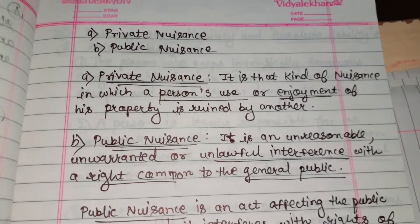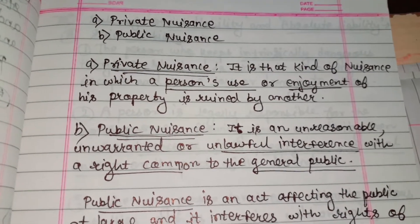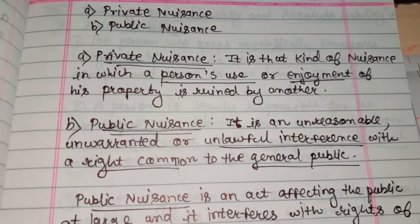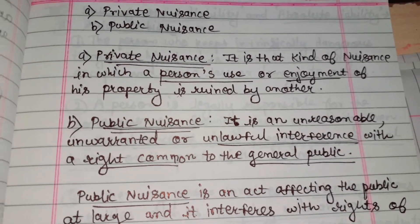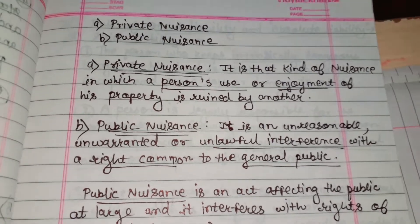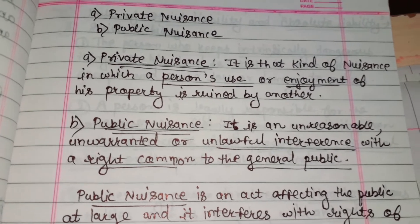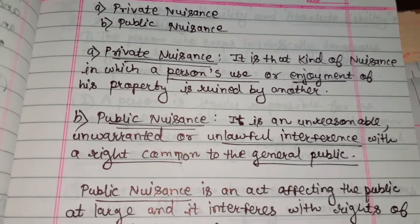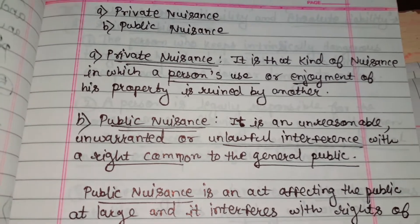Private nuisance is that kind of nuisance in which a person's use or enjoyment of his property is ruined by another. Such a nuisance, in which the person suffers privately, is known as private nuisance.